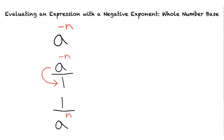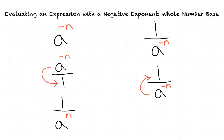If the base and exponent were in the denominator, then we would move it to the numerator. For example, in our problem 1 over a to the power of negative n, we would move both the base and exponent to the numerator. This results in a to the power of n.